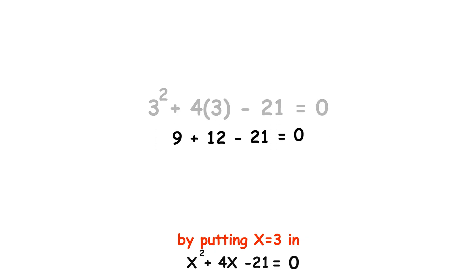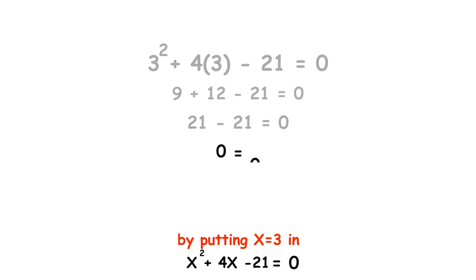First, x equals 3. 3 squared plus 4 times 3 minus 21 equals 0. 9 plus 12 minus 21 equals 0. 21 minus 21 equals 0. 0 equals 0.